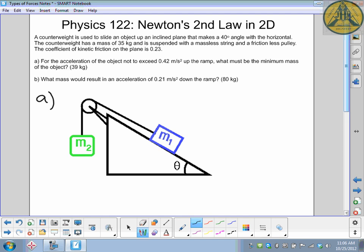So we're just going to do part A right now. For the acceleration not to exceed 0.42 meters per second squared up the ramp, what must be the minimum mass of the object? So we're going to try and figure out M1. Hopefully we'll get an answer around 39 kilograms.